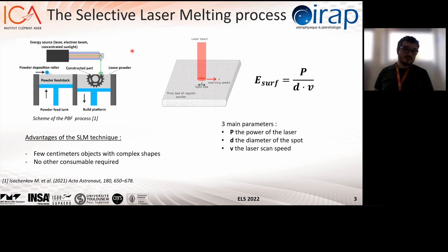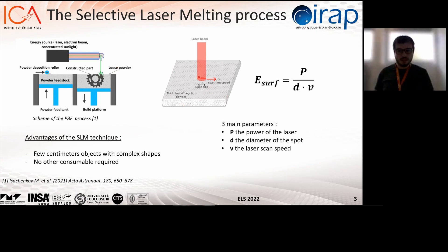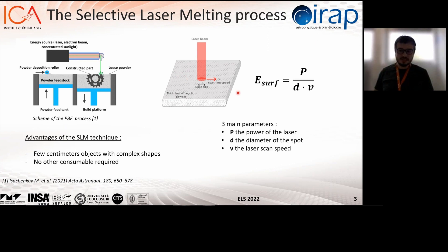The principle of this technique is quite simple, as you can see being described here. There's a powder bed of regolith being exposed to a strong heat source, which is a laser. The regolith powder will melt or sinter and will form an object layer by layer. The most important factor is the amount of energy distributed per area, which is directly related to the power of the laser, to the diameter of the spot, and the laser scan speed.